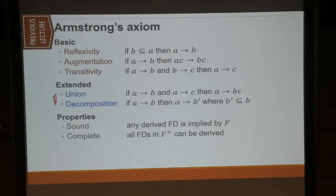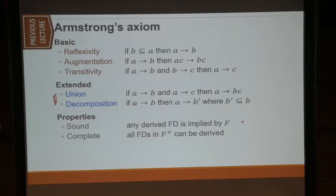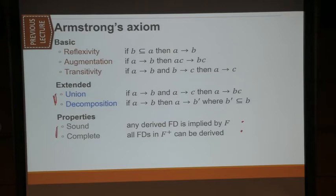The derivation of union and decomposition is part of next week's tutorial. There are two properties we are interested in: soundness and completeness. For soundness, if you keep applying the Armstrong axioms, all the functional dependencies you get will be implied by F. For completeness, if you try to find a functional dependency that is implied by F, you can keep applying Armstrong axioms and eventually arrive at it. Without completeness, algorithm one doesn't work.